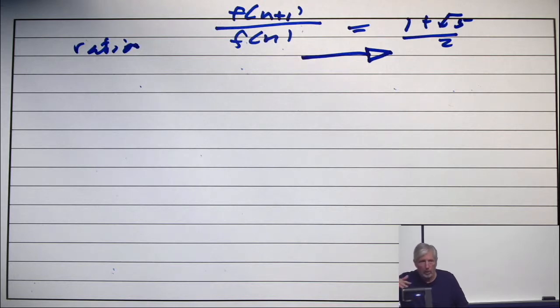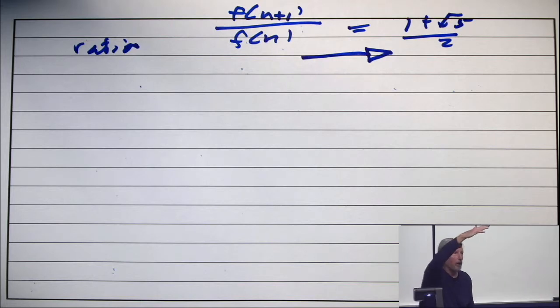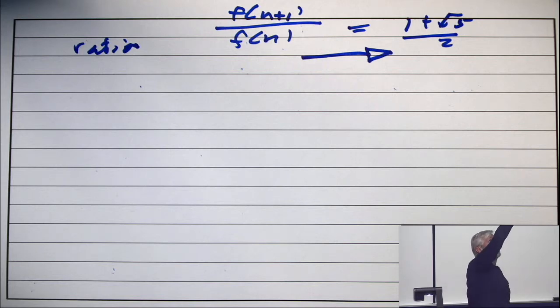So the Fibonacci sequence starts 1, 1, 2, 3, 5, 8. And it goes like that, wiggles. But ultimately, it's looking an awful lot like the simple exponential function, some constant times 1 plus square root 5 over 2 to the nth power. So if you take that nice smooth one, the Fibonacci sequence wiggles a little over it, a little under it, forever, and converges to it.